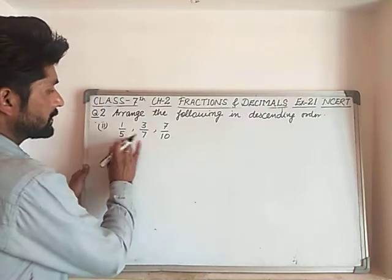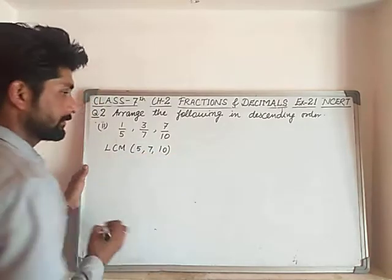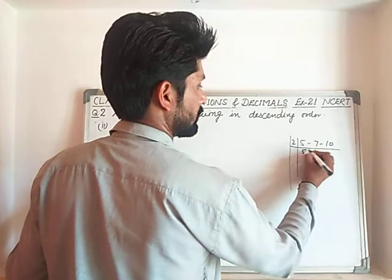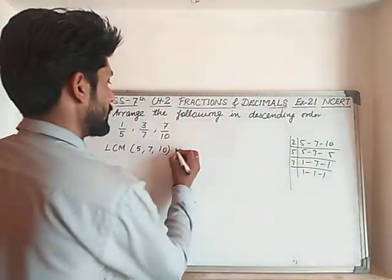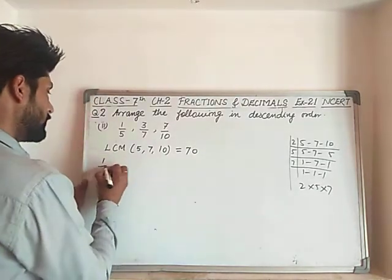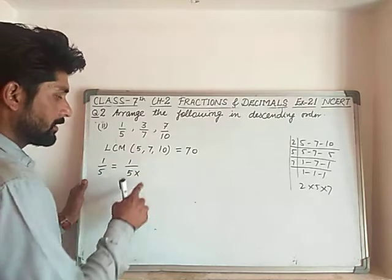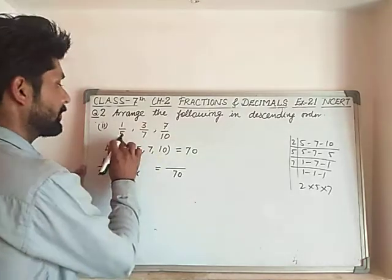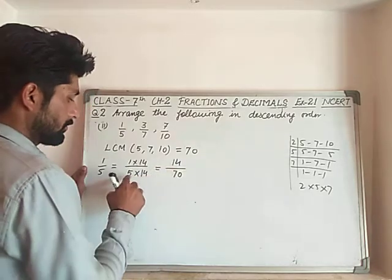To bring all fractions into like fractions, we take the LCM of denominators 5, 7, and 10. The LCM is 2 into 5 into 7, which equals 70. Now, for 1 upon 5: we divide 70 by 5 to get 14, and multiply — giving 14 upon 70. For 3 upon 7: we divide 70 by 7 to get 10, and multiply 3 by 10, giving 30 upon 70.